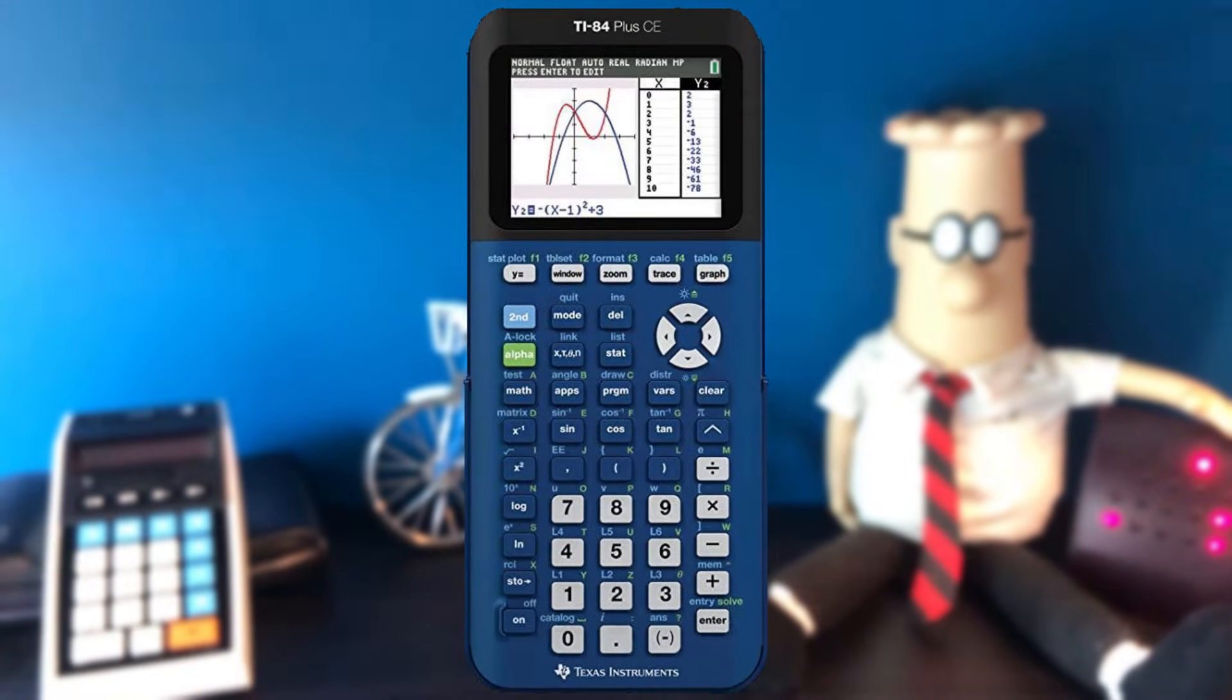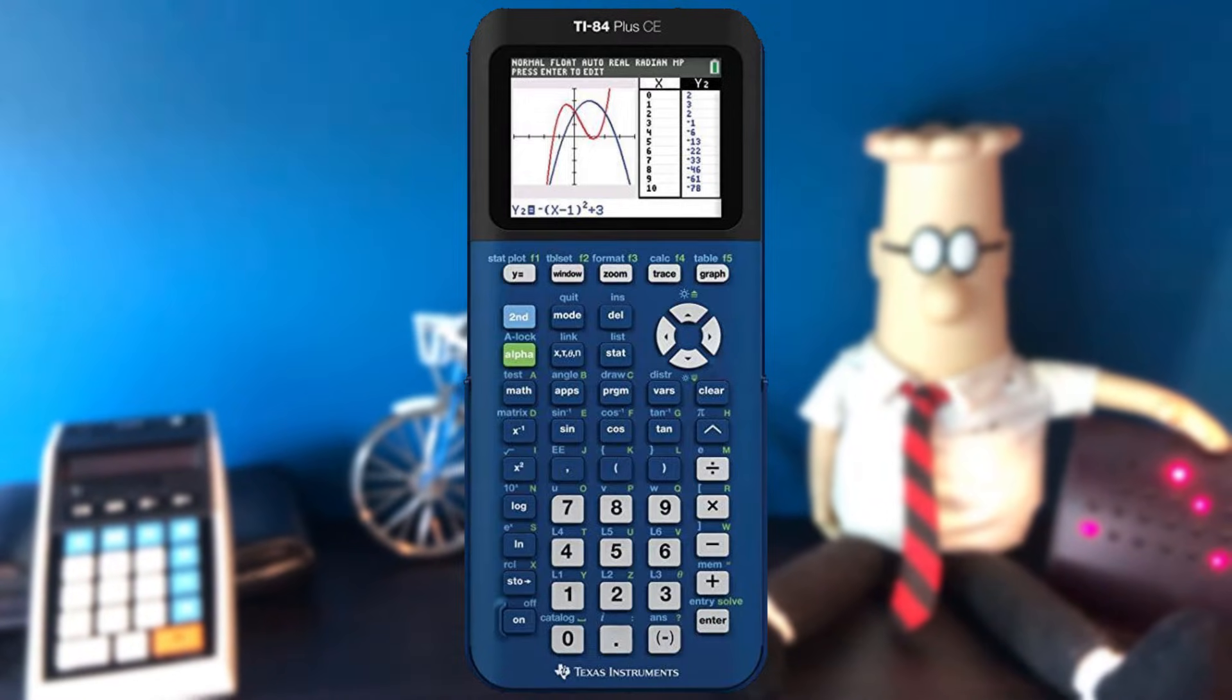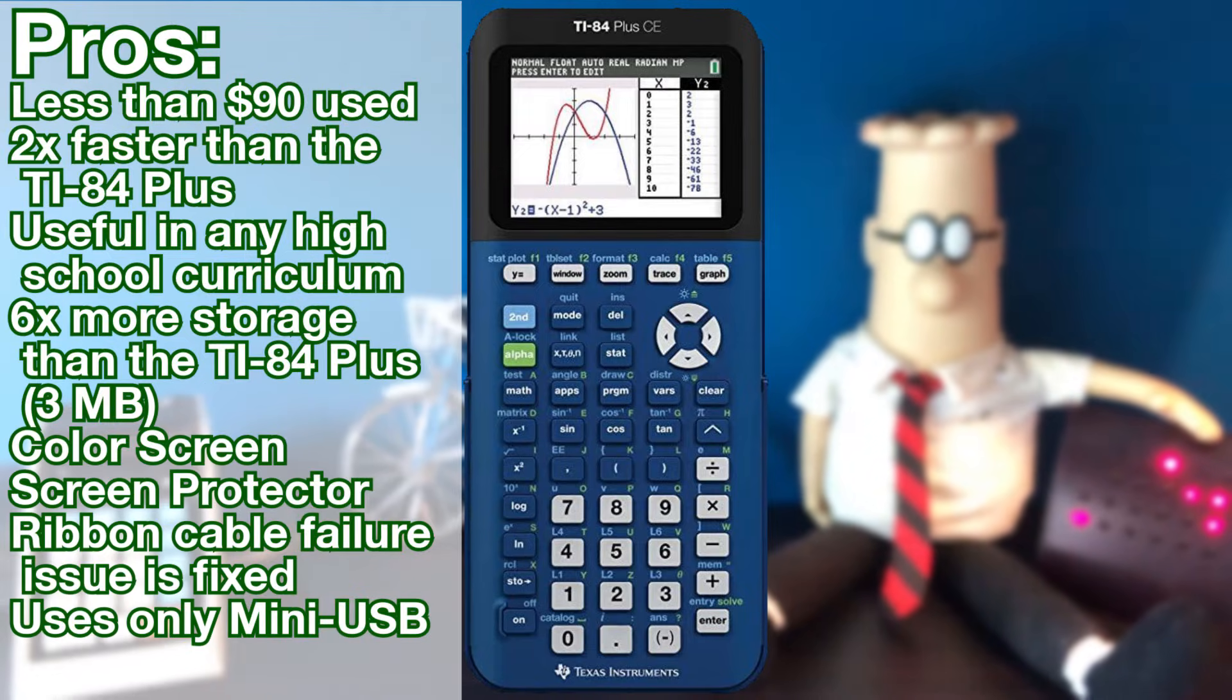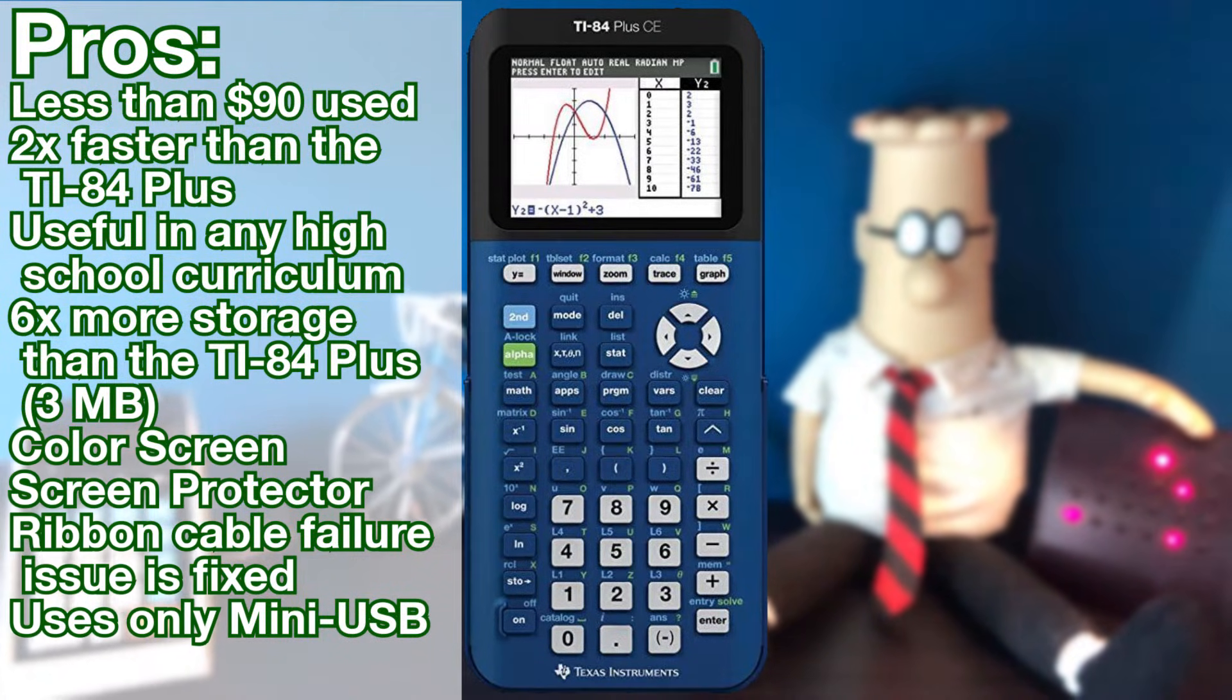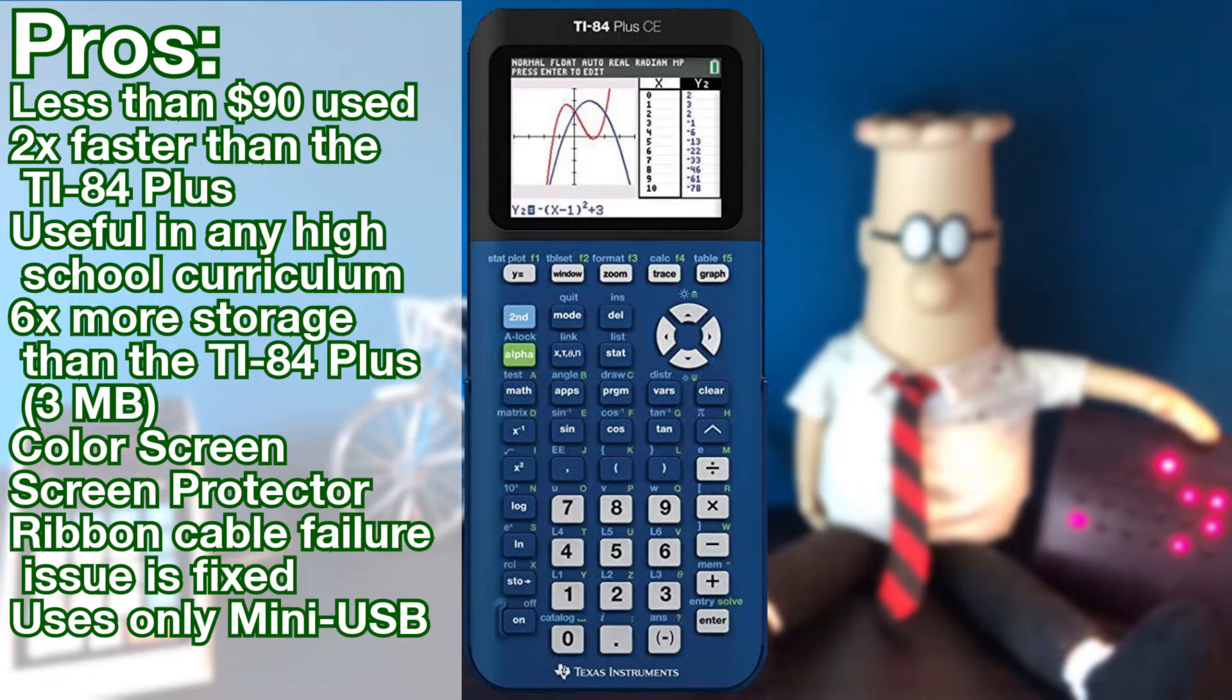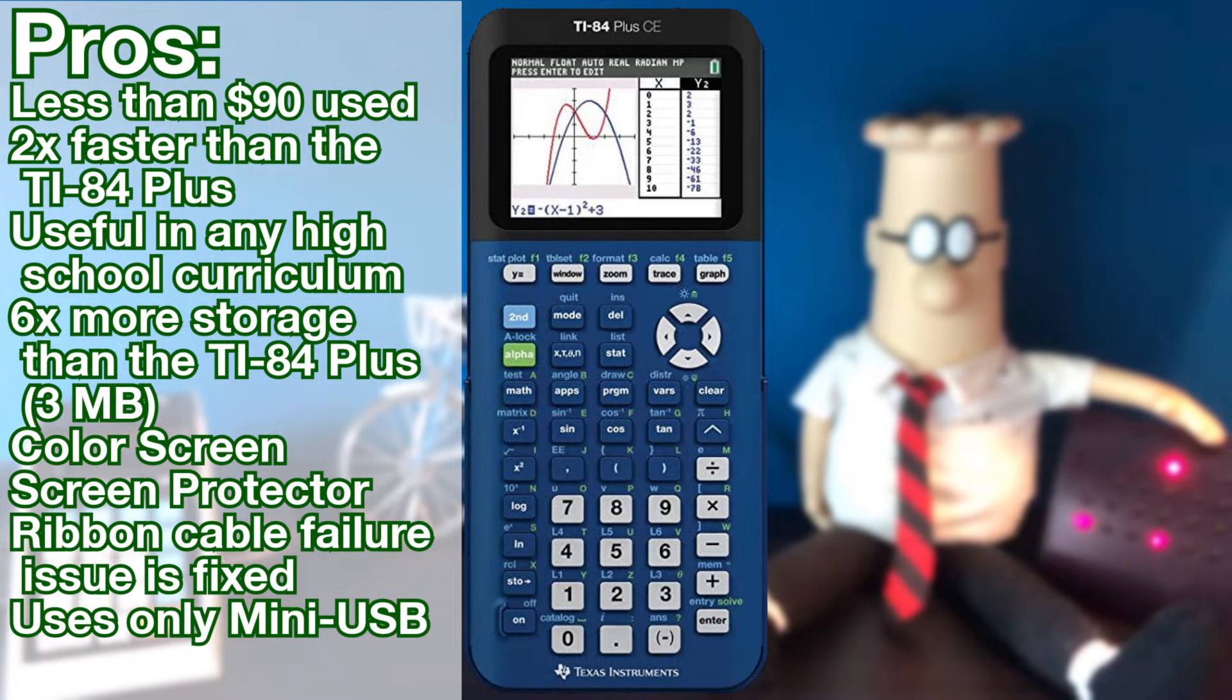The TI-84 Plus CE is the top-of-line graphing calculator in the TI-84 family. Although it's the most expensive option, it's much faster than any of its predecessors. It's backwards compatible with many programs, and it has even more storage. Its new screen connector fixed the ribbon cable failure issue. It also has a built-in screen protector, so there's no chance of damaging the screen.